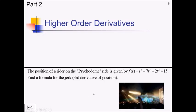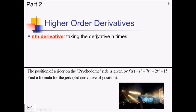We've got one more big concept to introduce: higher order derivatives. Let's introduce this with a real-life problem — the position of a rider on the psychodome ride is given by a polynomial, and we want a formula for the jerk, which is the third derivative of position. The nth derivative means taking the derivative n times, so the third derivative means differentiating once, then again, then again.